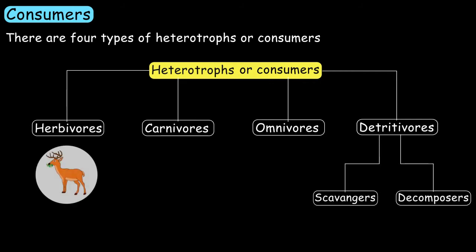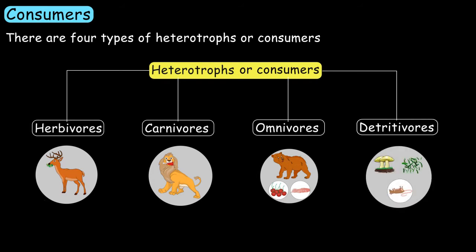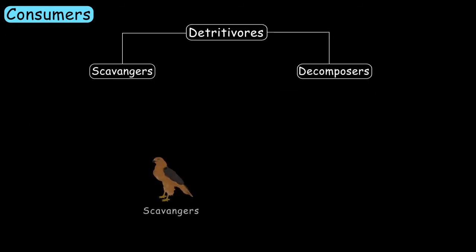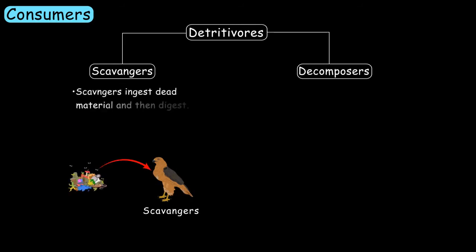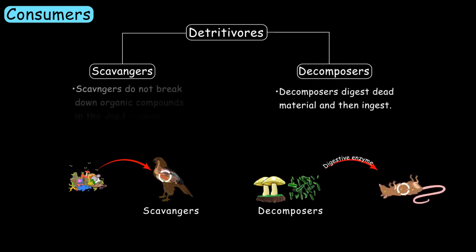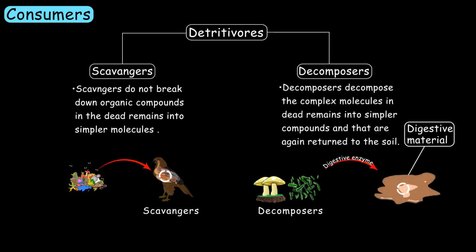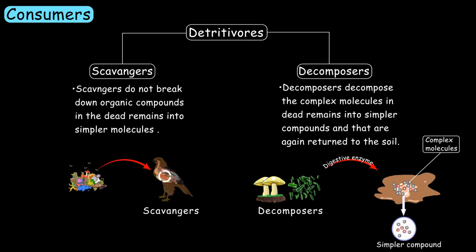Herbivores are plant eaters. Carnivores are flesh eaters. Omnivores eat plants as well as flesh. Detritivores feed on dead plants and animals. Scavengers ingest dead material and then digest it. Decomposers digest dead material and then ingest it. Scavengers do not break down organic compounds in the dead remains into smaller molecules, but decomposers decompose complex molecules and dead remains into simpler compounds that are then returned to the soil.